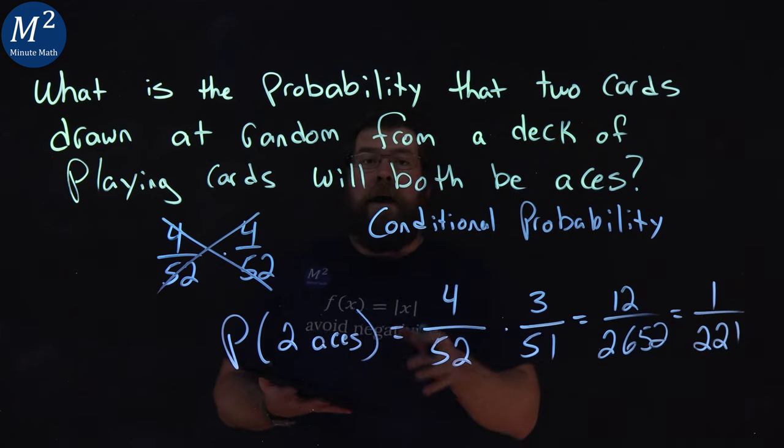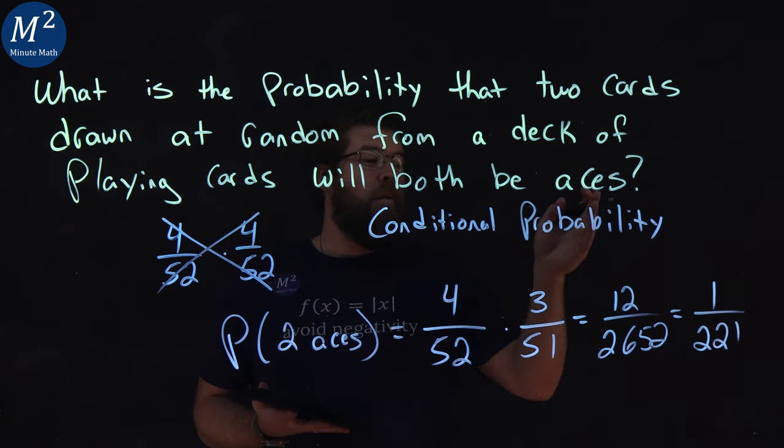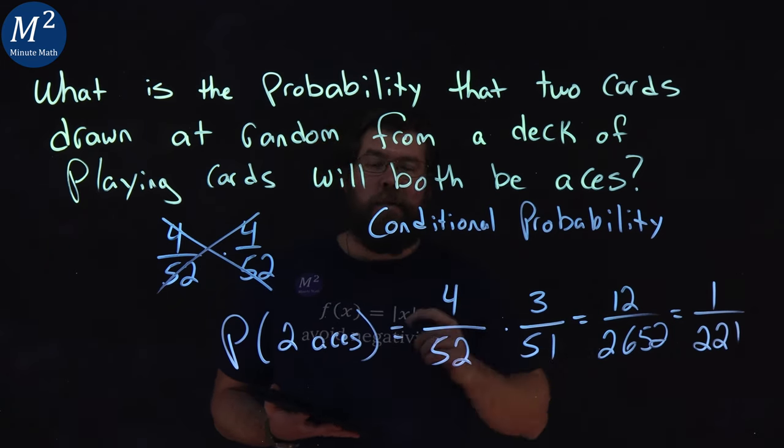And so, the probability that we draw two cards and they're both aces from a deck is 1 out of 221.